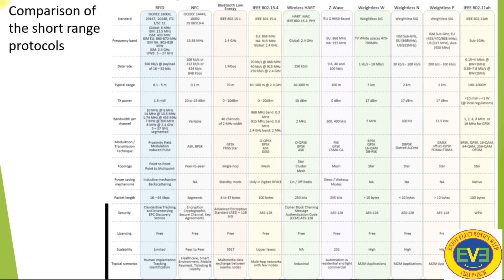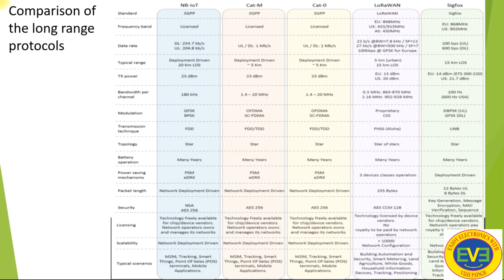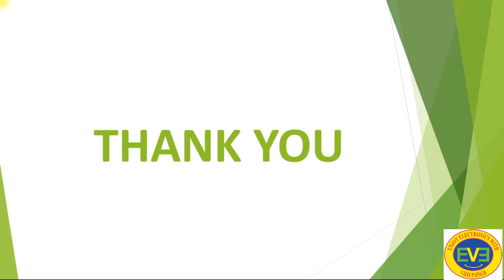A comparison of short-range protocols is provided, including RFID, NFC, Bluetooth, BLE, IEEE 802.15.4, WirelessHART, Z-Wave, Weightless W, Weightless N, Weightless P, and IEEE 802.11ah. Long-range protocols are also compared. These are the main MAC-related protocols covered in this lecture. More standards will be covered in the next lecture. Thank you.